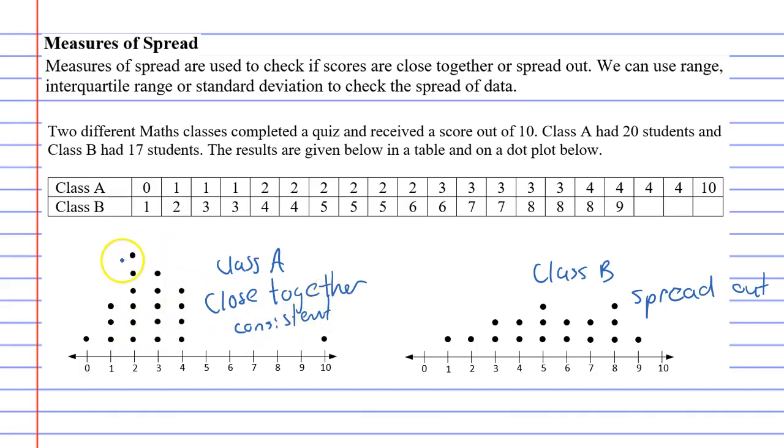Because class A consistently get marks between 0 and 4. They did have an outlier of 10. This is called an outlier. But if you were to ignore the outlier, most of the marks are close together.